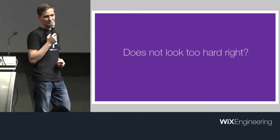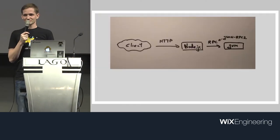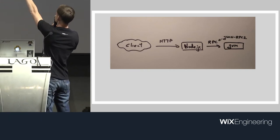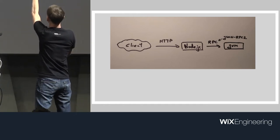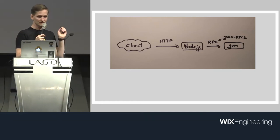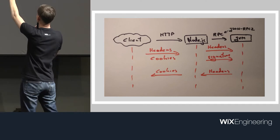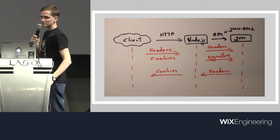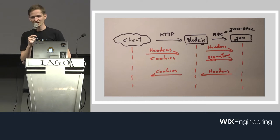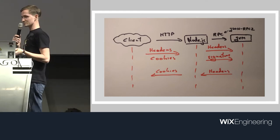It doesn't look that hard, right? You just take one thing, replace it with Node — how hard can it be? Well, there are some things we had to do. Request flow: HTTP comes from client to Node, you call JVM via RPC, which is a nice JSON-RPC 2 protocol standard. But then we have all the headers, cookies, passing signatures, writing back — some reverse engineering, and not knowing if it actually works because it pretends like it works but you'd never know.